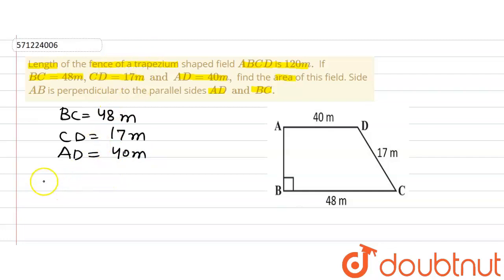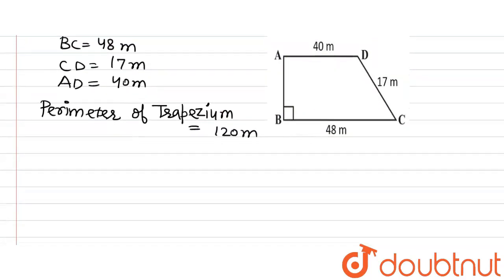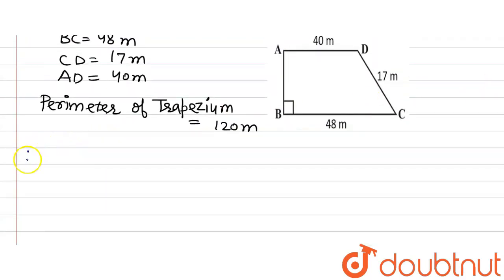And length of fence. Length of fence of trapezium field will be equal to perimeter. So we are given perimeter of trapezium, which is equal to 120 meter. So perimeter of trapezium is nothing but sum of the sides.